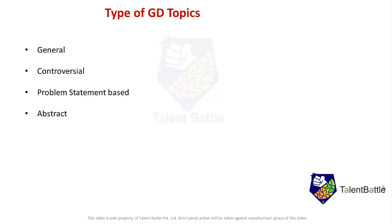Now let me cover which types of topics you will face during GD. There will be general topics — for example, climate change, technology creating unemployment, or social media. There will also be controversial topics where they check whether you can manage difficult or critical situations, like communal clashes or political issues. Problem statement-based topics are rarely asked — they provide a case study and give you two to three minutes to prepare before discussing. Abstract topics can also appear, like a color or a rainbow. For campus placement, most topics will be from the general category.